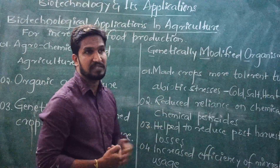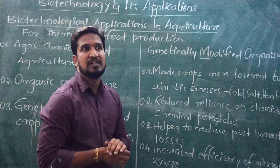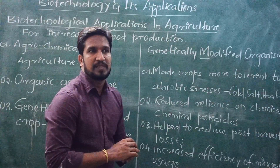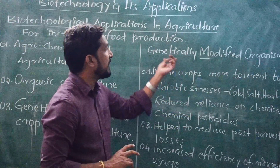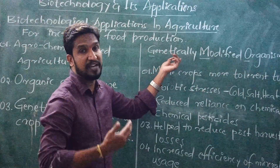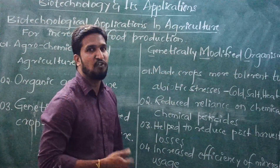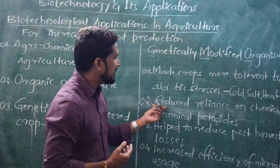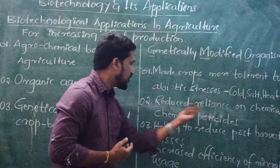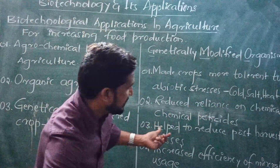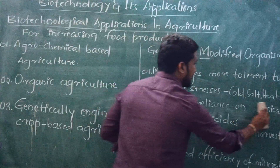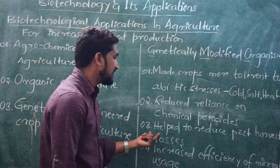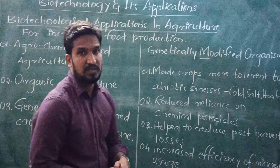The second benefit is reduced reliance on chemical pesticides. The usage of fertilizers is going to be reduced by genetically modified crops because they will become pest-resistant. A pest-free plant can be formed. That is the second benefit: reduced reliance on chemical pesticides.